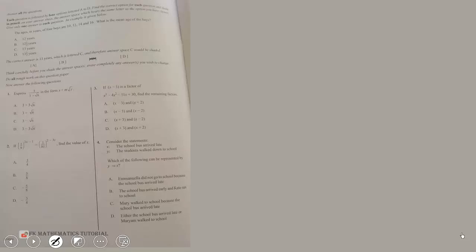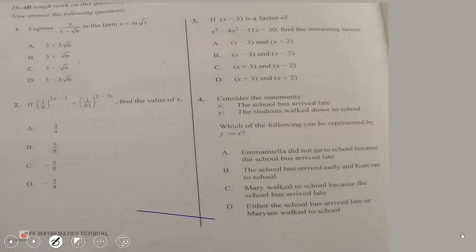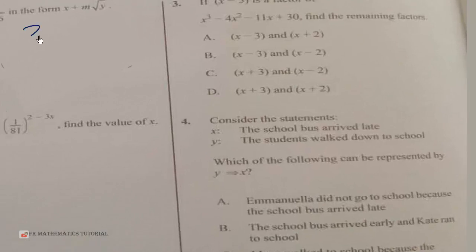Hello, let's solve the WASSCE 2023 Paper 1 in this video. Let's begin with the first question: we have to express 3 over (3 minus root 6) in the form X plus M root Y.